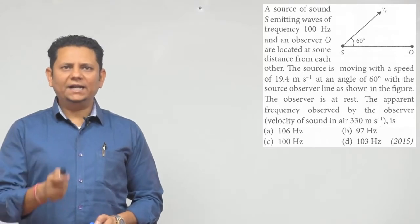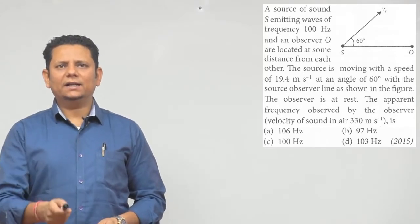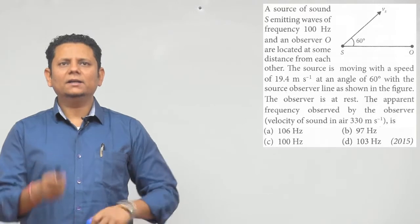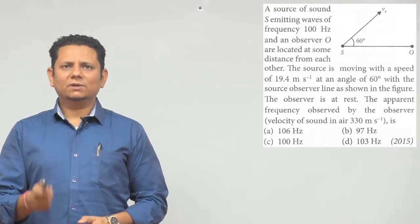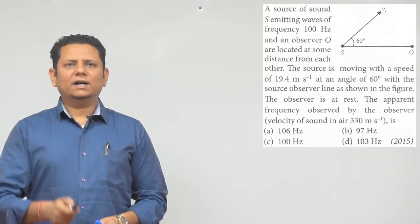The source is moving with a speed of 19.4 meter per second at an angle of 60 degree with the source observer line as shown in the figure. The question is,